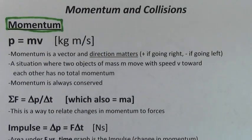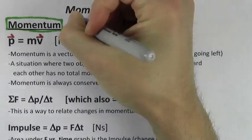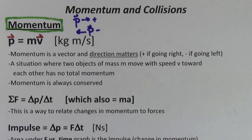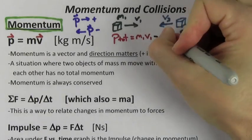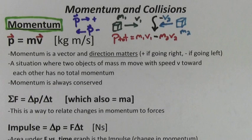Momentum is given by the formula P equals MV. Momentum is a vector, which means it's positive if it points to the right and negative if it points to the left. People forget this all the time. When finding the total momentum, you need to include a negative sign for any objects traveling to the left.